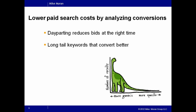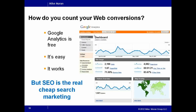Those are two tips for paid search, but we're going to spend most of the time on organic search — SEO. Before we leave paid search though: if you don't know how to count your conversions, a free way to do that is with a free analytics tool like Google Analytics. It's free, it's easy, it works. If you're trying to save money and you've avoided analyzing conversions because it's too expensive, this free tool will let you do it. It can help you analyze conversions for both paid search and organic search. And organic search is where you don't have to pay the search engines for every click, so that's really where you have a chance to save money on search marketing.